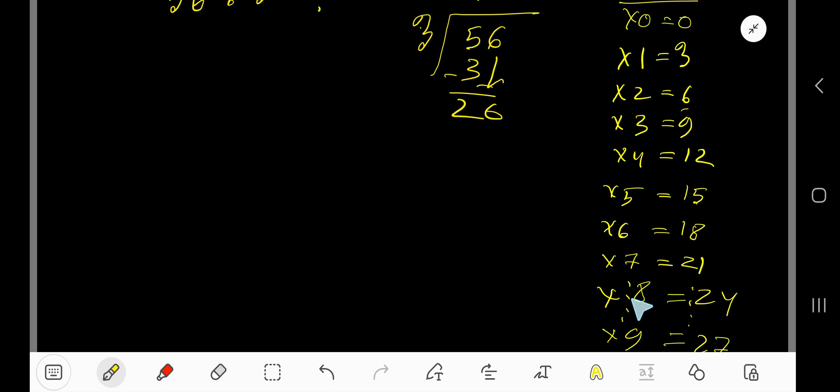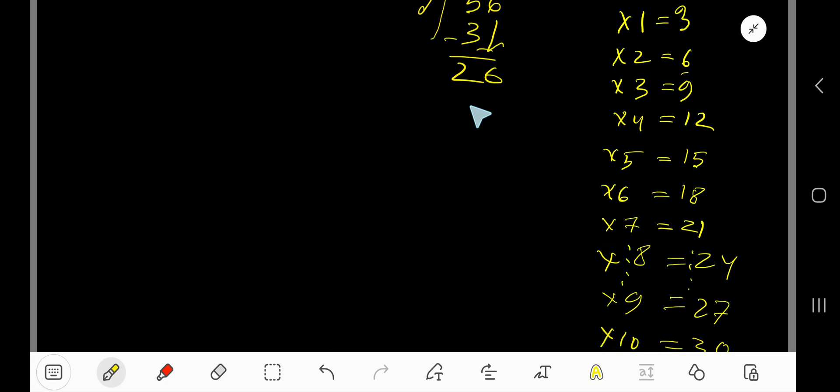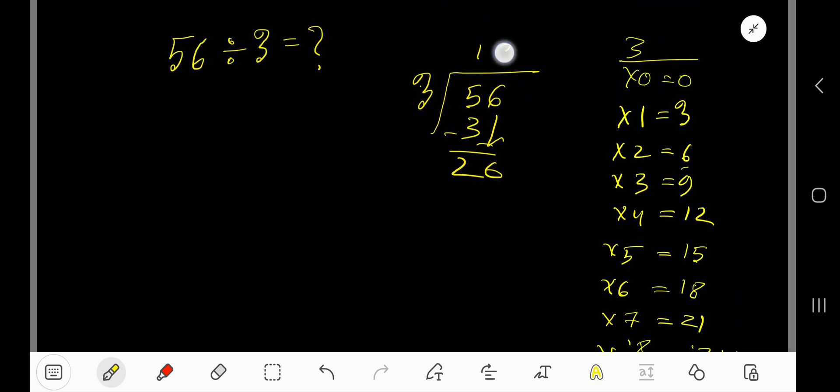3 goes into 26 how many times? 9 times 3 is 27, which is greater than 26, so we need to stop here. 8 times, that gives us 24. 8 times 3 is 24. Subtract and we are getting 2. Since 2 is less than 3, we can say that this is the remainder. So our answer is 18 remainder 2.